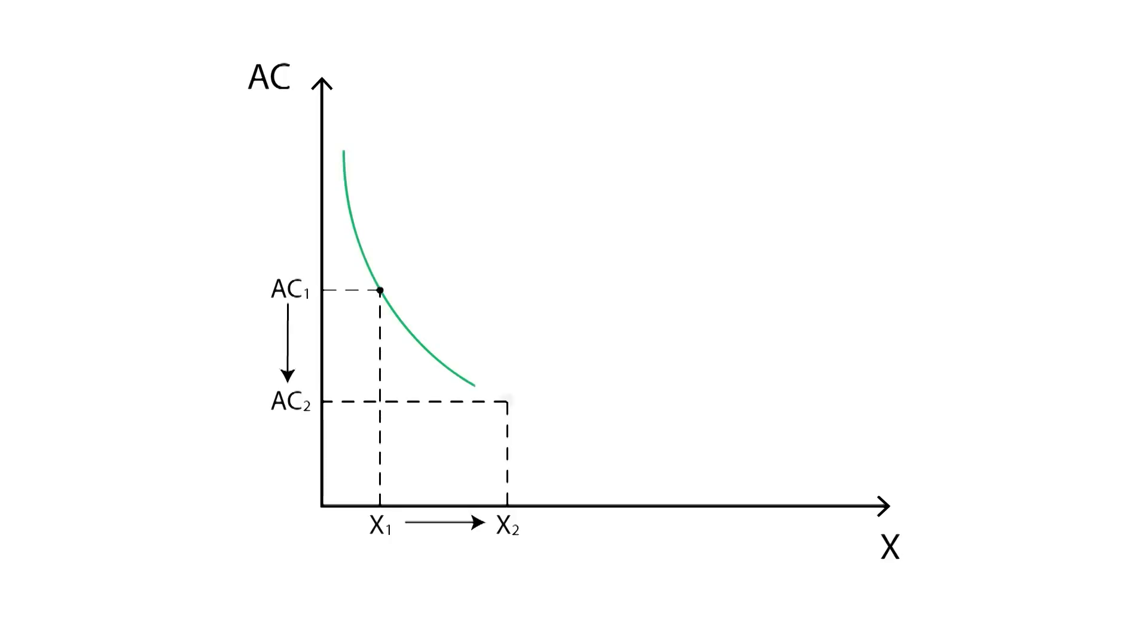This green curve shows the path that the average cost follows as output level increases. As we can see, at first, the average cost of production drops with every additional unit of output. But then, at point E, it starts increasing with every unit.